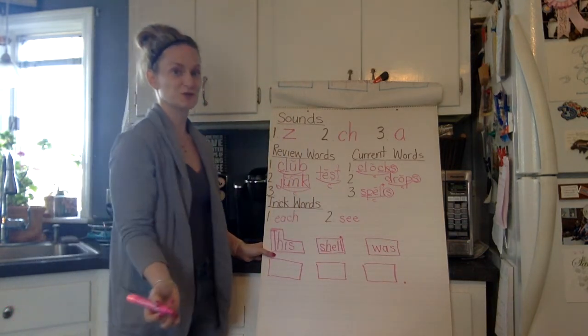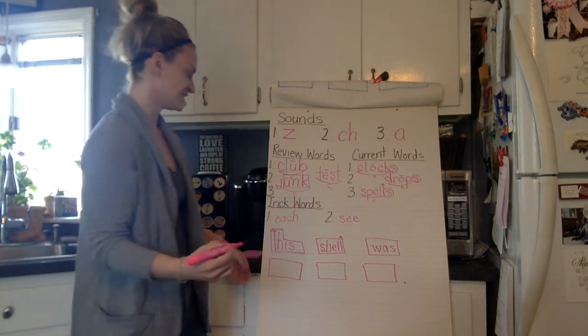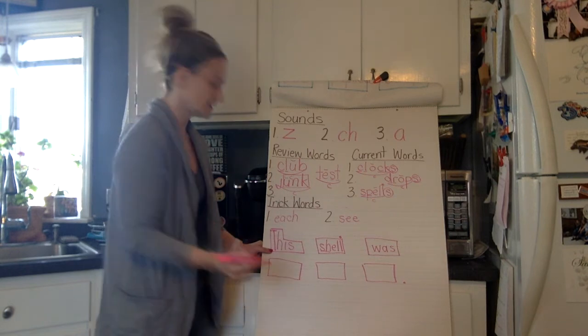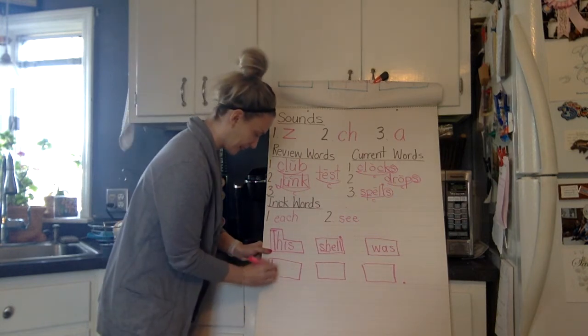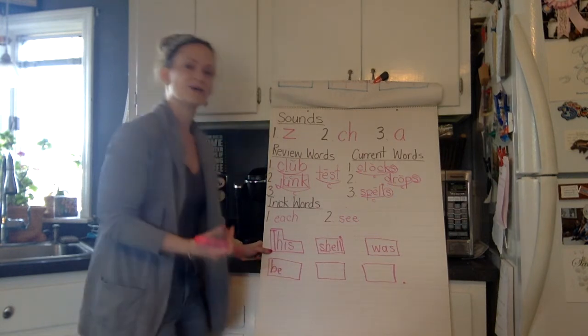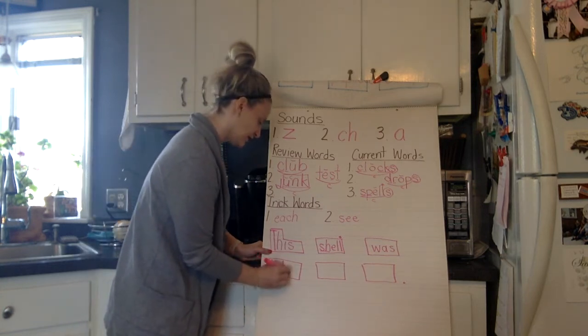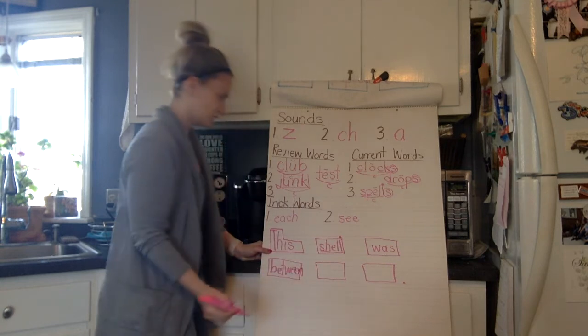Between. Between. Between was one of those trick words we just did when we did each and see. B-tween. Let's take it apart. It starts with B. We all know the trick word be. B-E, right? Okay. And then we have tween. T-W-E-E-N. Between.